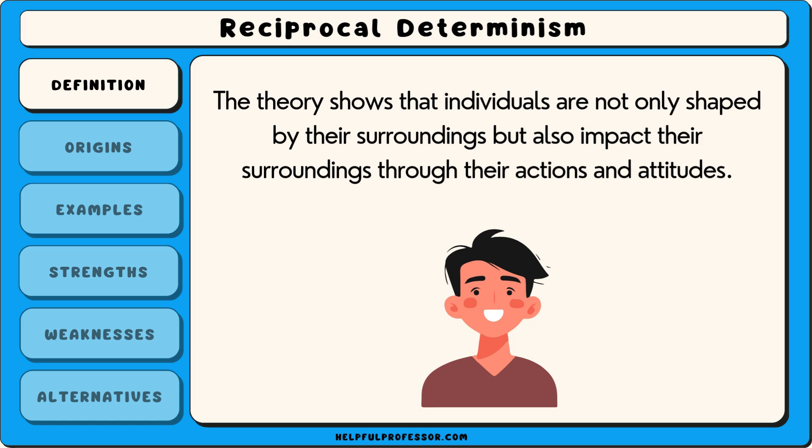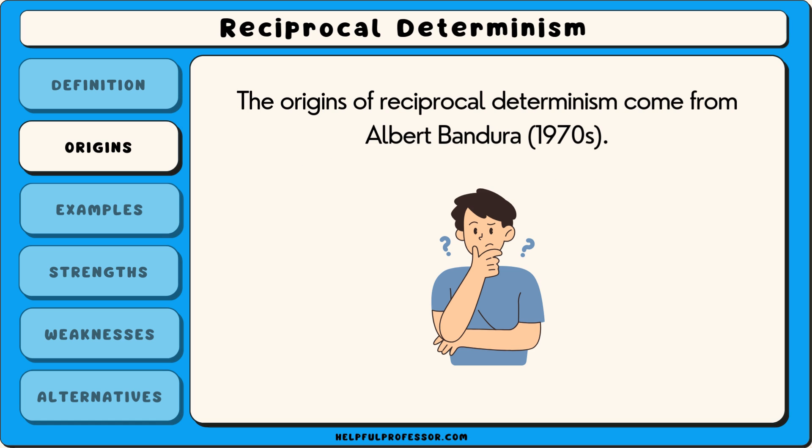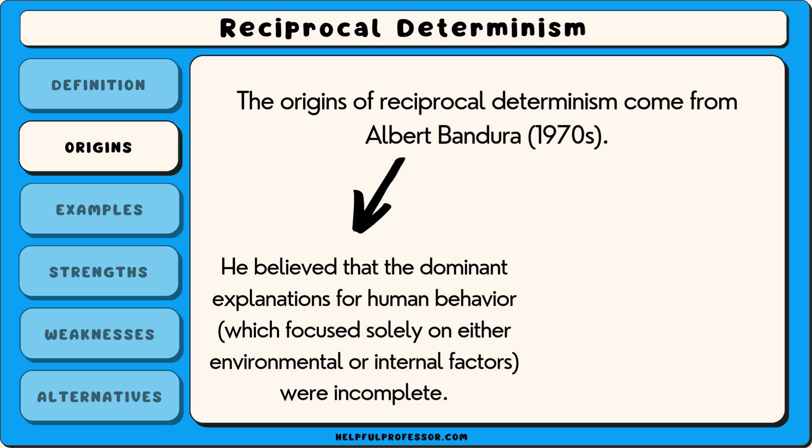The origins of reciprocal determinism come from Albert Bandura, a psychologist known for his work on social cognitive theory. In the 1970s, Bandura developed this idea as part of his broader theory of learning and behaviour, called social cognitive theory. He believed that the common explanations for human behaviour, which focus solely on either environmental or internal factors, were incomplete.